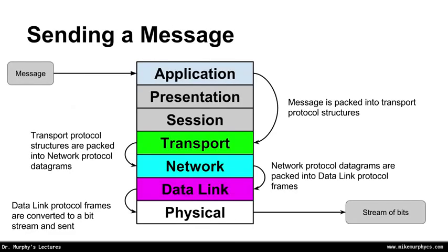If I send a message, that message is going to be sent at the application layer. The application layer is going to wrap that message into some transport protocol structures. The transport protocol structures are going to get packed into network protocol datagrams. The network protocol datagrams are going to be packed into data link protocol frames. And the data link protocol frames are going to be converted into a bit stream sent over some kind of physical medium, resulting in a stream of bits on that physical medium.